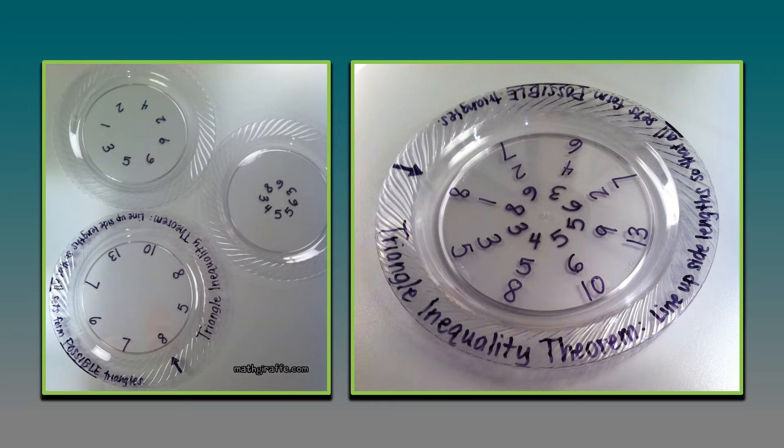In this one, the challenge is to get each set of three numbers to represent side lengths for a possible triangle using triangle inequality theorem. There's only one correct answer and one way to line it up so they all work out.